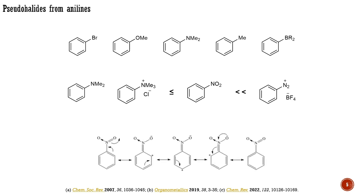Ammonium salts are not suitable coupling partners because the introduction of the third alkyl group at nitrogen makes these systems considerably sterically hindered. Although the carbon-nitrogen bond in nitro compounds is highly polar, these systems are also not ideal coupling partners. Here, we encounter another type of conjugation where electrons are donated from the aromatic ring to the nitro group, imparting a partial double bond character to the carbon-nitrogen bond and increasing the rigidity of the bond.